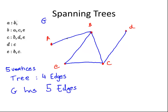Can we remove the edge A to B? No — that would disconnect A from the rest of the vertices, so we can't remove that one. Likewise, we can't disconnect that one either. But we can remove any of the remaining three edges. We can remove that one, that one, and that one, and in each case we would get a spanning tree of G.